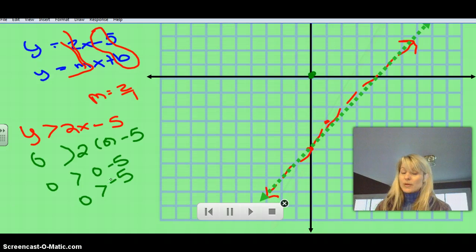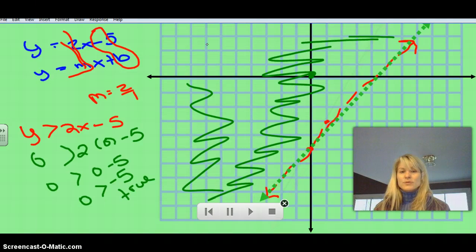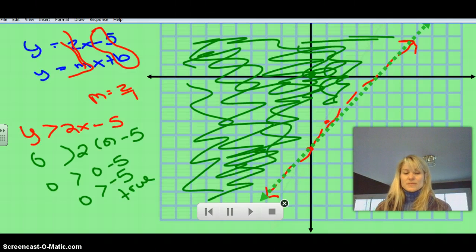Is that true? Think about it. Is 0 bigger than negative 5? Would you rather have 0 dollars than minus 5 dollars? Yes. So this is true. So that means the (0, 0) is on the top side of this line. So that means all the points here are true for this equation. That's true.